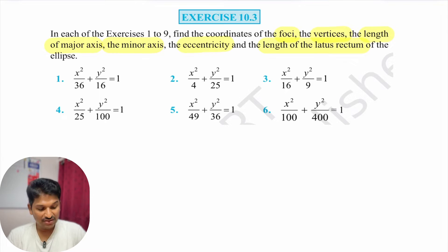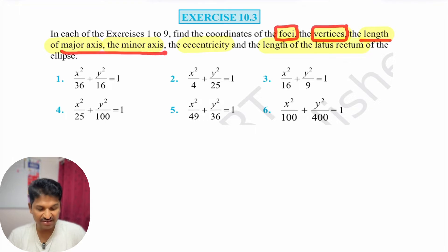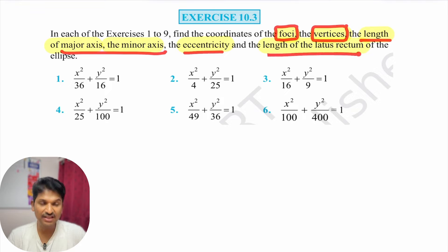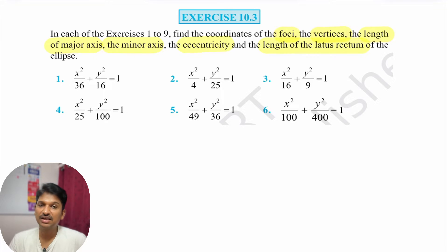In all these 6 ellipses, they are asking us to find: foci, vertices, length of major axis, minor axis, eccentricity, and length of latus rectum. These are the things you need to calculate.